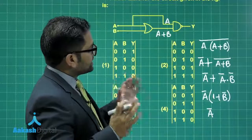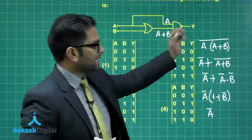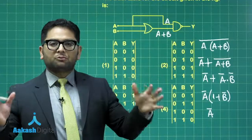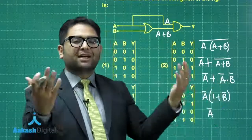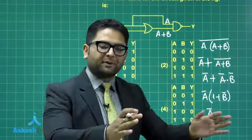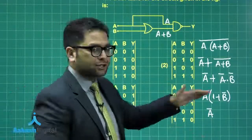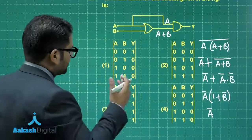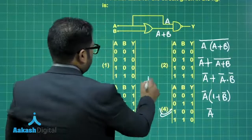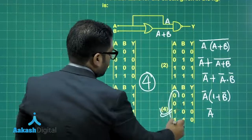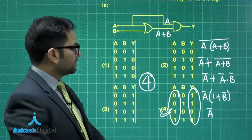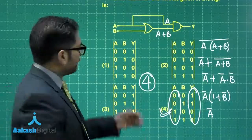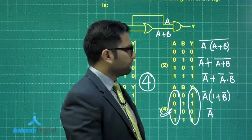The ultimate output is Ā. This means whatever the value of A, the output is simply the complement of A, with no dependence on B whatsoever. This is clearly reflected in option number 4, where the output is complemented for every value of A, irrespective of B. So option 4 is correct.